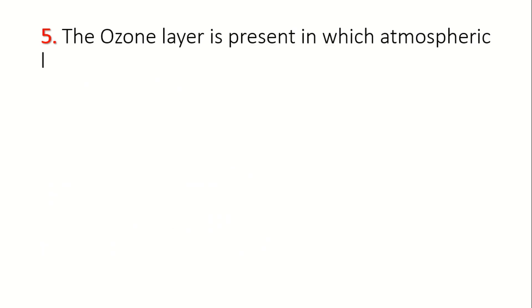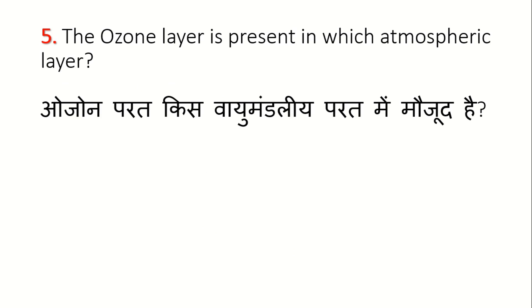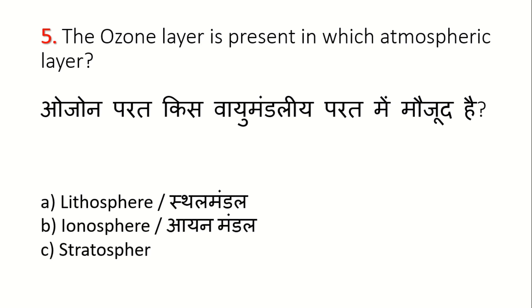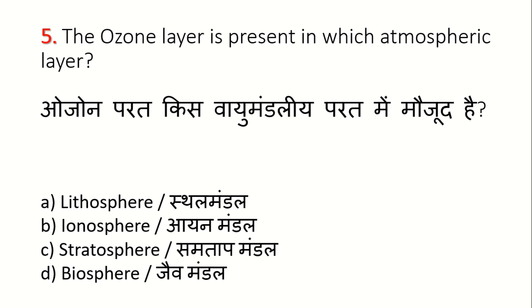Let's look at the next question. The ozone layer is present in which atmospheric layer? There are five different layers around the earth: the troposphere (the first and lowest layer), stratosphere, mesosphere, thermosphere, and exosphere. The ozone layer is present in the stratosphere.